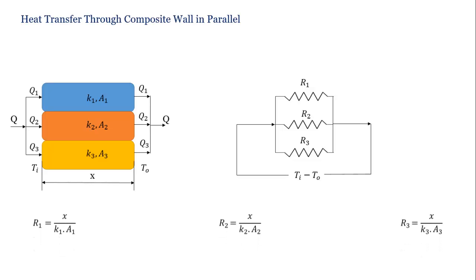We know that R1 value will be X upon K1 A1, the X value and this K1 A1 that will be the R1. For R2, X upon K2 A2. Similarly R3 equal to X upon K3 A3.